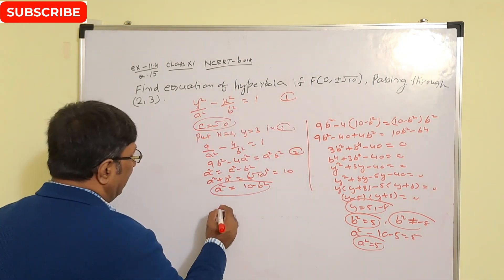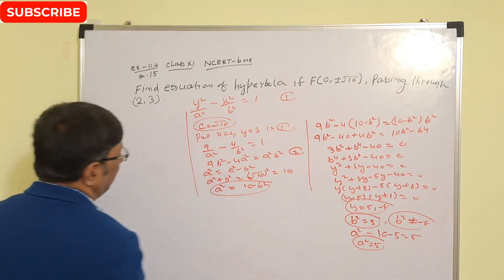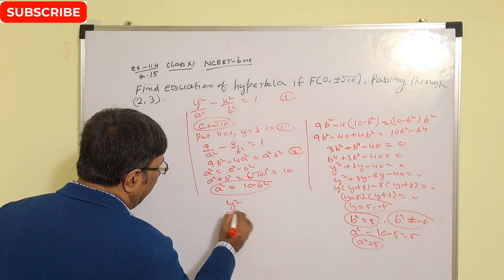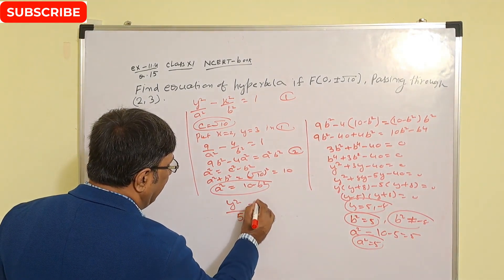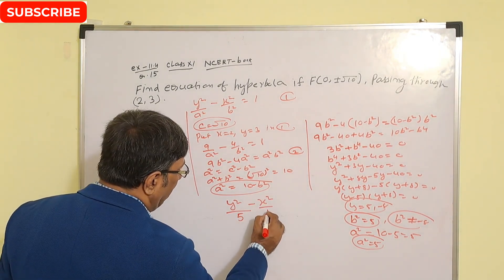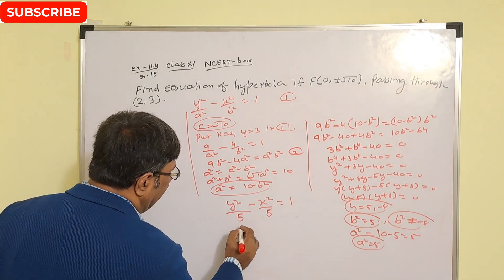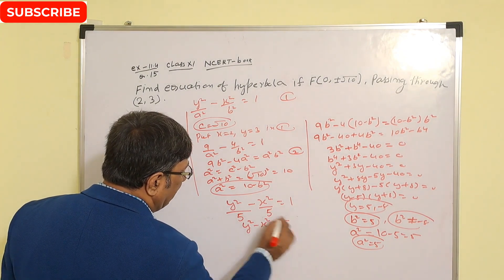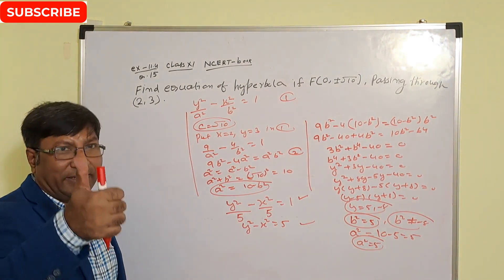Now the equation of the hyperbola is y²/a² − x²/b² = 1. With a² = 5 and b² = 5, this becomes y²/5 − x²/5 = 1. You can also write this as y² − x² = 5. Both forms are the correct answer. Thank you.